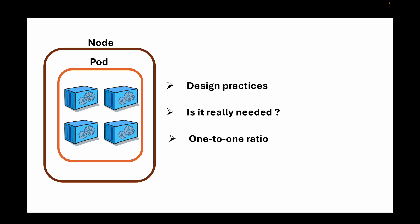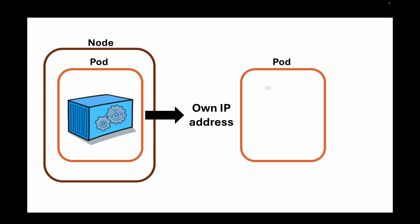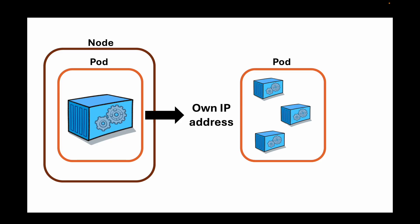The next question is how do pods communicate and how does IP addressing work? When we create a pod and assign it to a node, each pod is allocated its own IP address. This is important to consider with multi-container pods because multiple containers in the same pod share the same IP address. If your application needs its own unique IP address, you will need to run that container in its own separate pod.